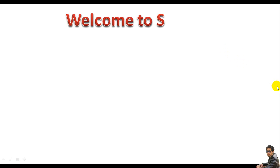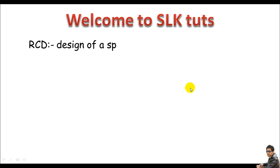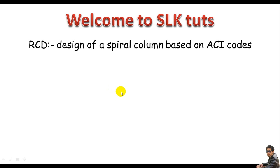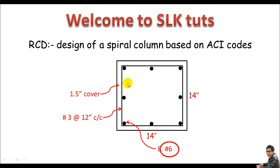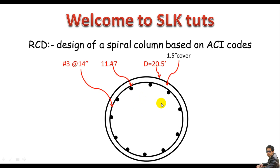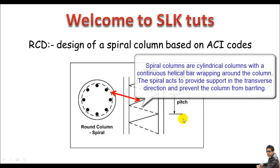Assalamu Alaikum, YouTubers! Welcome back to SLK Tools. In this section, we just learned the design of a spiral column based on ACI codes. Remember, from the previous three lectures we have learned the design of a square tie column and also the design of a circular tie column. Here our approach will be just a spiral column — a round column with spiral.